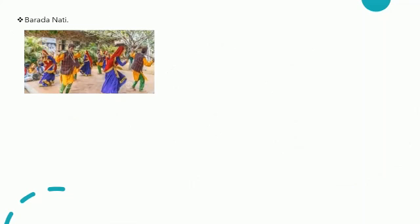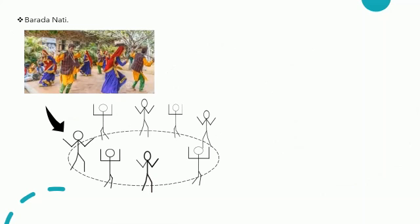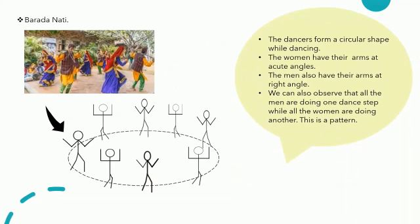Let us look at another dance form called Bharadanati. Here is the simplified version. The dancers form a circular shape while dancing. The women have their arms at acute angles, while the men have their arms at right angles. We can also see that the women are all doing the same step while the men are all doing the same step. This is a pattern. Thus we can conclude that symmetry and geometry are vital parts of dance.